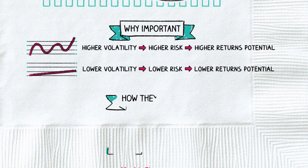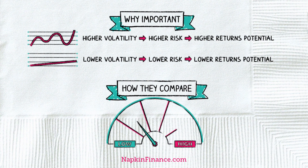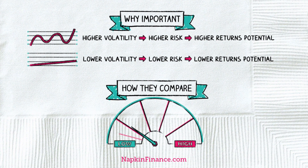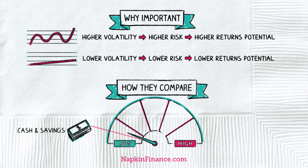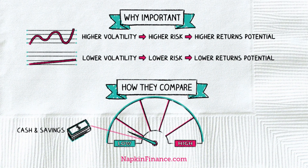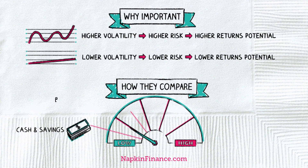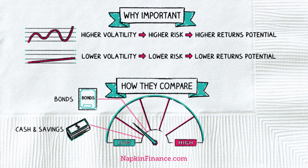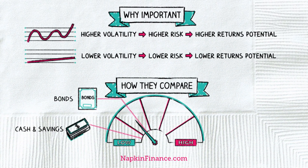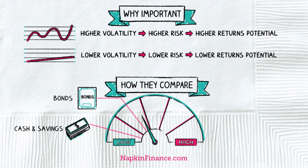Here's how some of the major types of investments rank in terms of volatility. Cash and savings accounts are very low volatility because they don't bounce in value. Bonds can rise or fall in price, making them more volatile than cash.